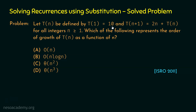This is the base case because in the right-hand side we do not have the function t — it is the easiest case to solve. The recursive case is t(n+1) equal to 2n plus t(n), where we can observe t appears on the right-hand side. We need to find the growth rate of t(n) using the substitution method.